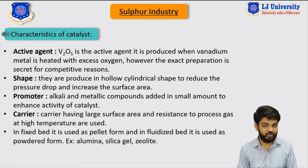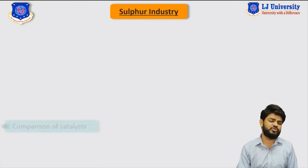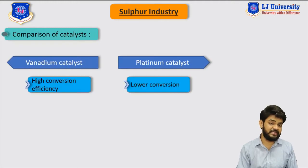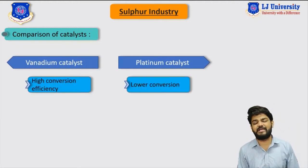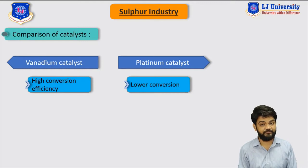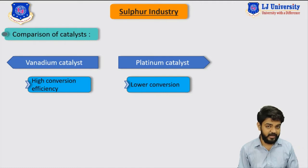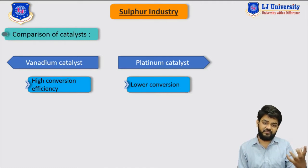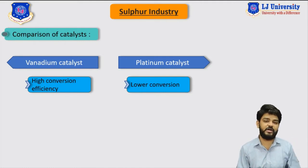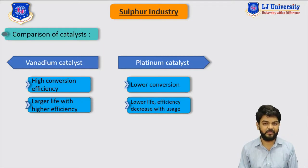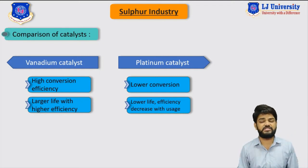Now let's quickly see the comparison between vanadium pentoxide and platinum catalysts. As you can see on the screen, vanadium pentoxide gives higher conversion efficiency while the platinum catalyst gives lower conversion. Therefore, it is very much beneficial to use vanadium pentoxide. Additionally, vanadium pentoxide has a relatively longer life at higher efficiency, while the platinum catalyst has lower life and less efficiency.